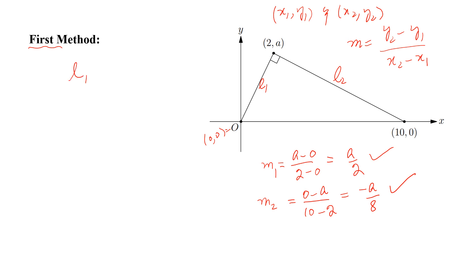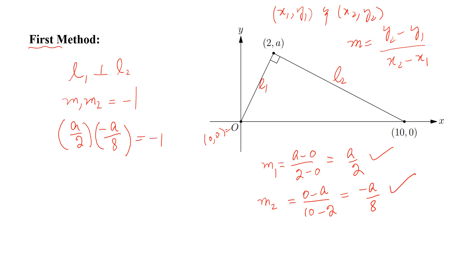From the question, L1 is perpendicular to L2. We know that if two lines are perpendicular, the product of their slopes equals minus 1. So M1 times M2 equals (A divided by 2) times (minus A divided by 8) equals minus 1. Multiplying: minus A squared divided by 16 equals minus 1, so A squared equals 16.